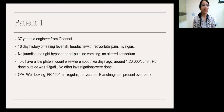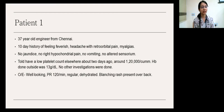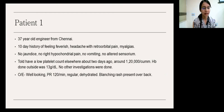Patient one was a 37-year-old engineer from Chennai. He came with a 10-day history of feeling feverish but no clear recorded temperature, headache with retroorbital pain and myalgias. There was no history of jaundice, no right hypochondrial pain, no vomiting and no altered sensorium. He was told to have a low platelet count elsewhere about two days ago — verbally he said it was about 1,20,000. The hemoglobin done outside was 13 g/dL. On examination, he was well-looking, pulse rate of 120 beats per minute, regular, and he was dehydrated.